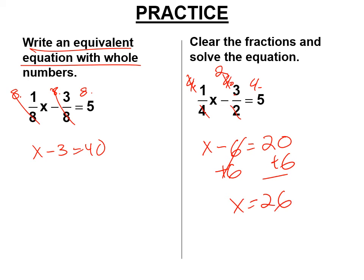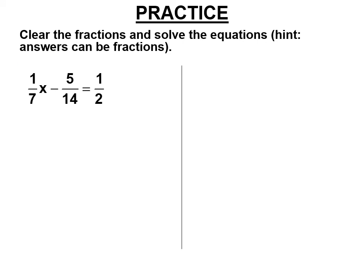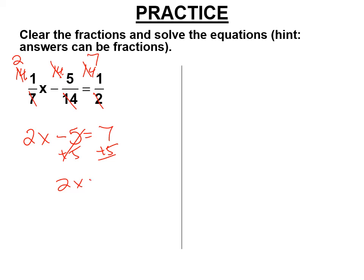We're going to multiply both sides by 14. The 7 cancels the 14 and becomes a 2. The 14s cancel. The 2 cancels and the 14 becomes a 7. So we get 2x minus 5 equals 7. Add 5 to both sides: 2x equals 12. Divide both sides by 2: x equals 6.